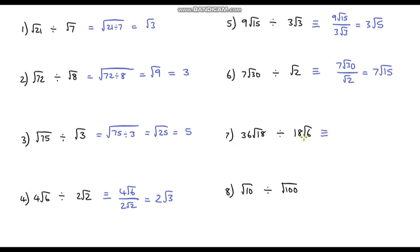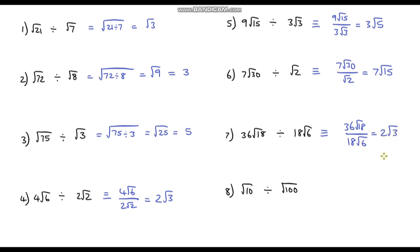Question 7: 36 root 18 over 18 root 6. Thirty-six divided by 18 is 2. Then root 18 divided by root 6: since 18 divided by 6 is 3, that gives root 3. So the answer is 2 root 3.